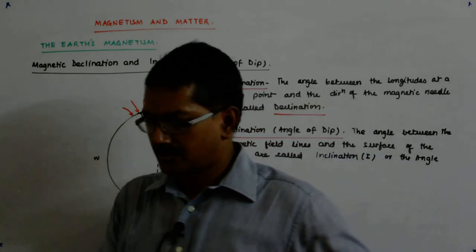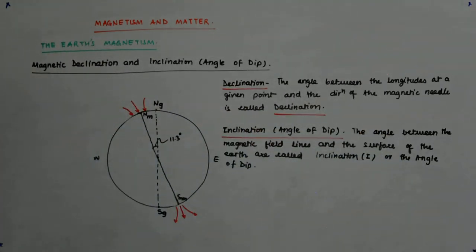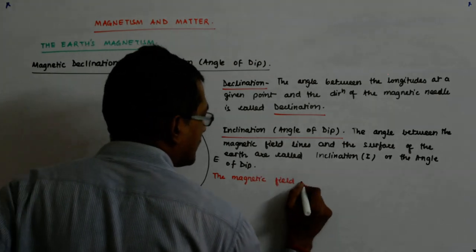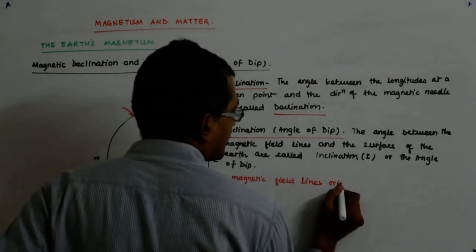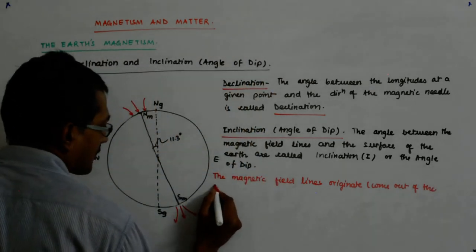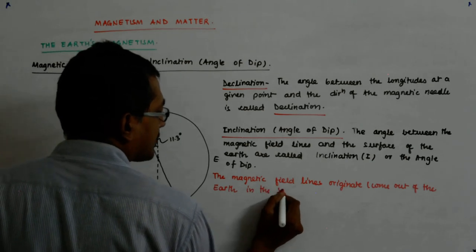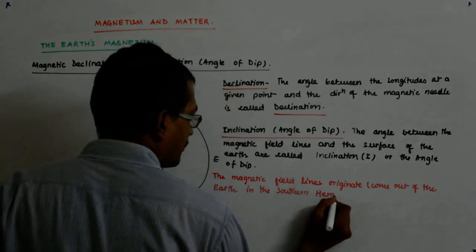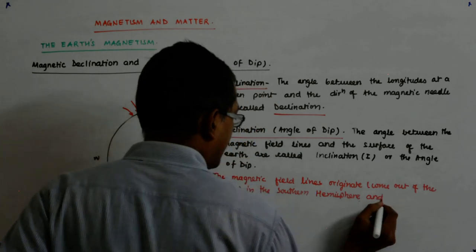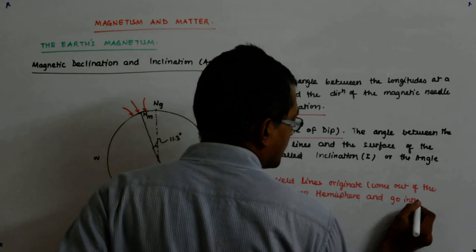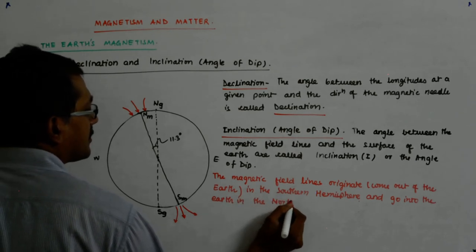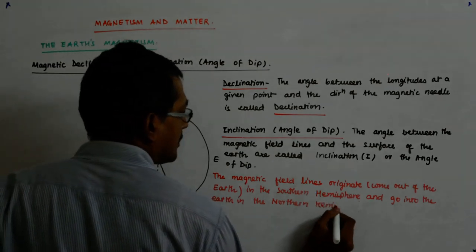Obviously the magnetic field lines will be originating at the north pole. The magnetic field lines come out of the earth in the southern hemisphere and go into the earth in the northern hemisphere.